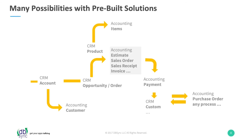One of the cooler things we've done at DBSync is build out templates with common integration scenarios. A very common data flow is managing your pipeline via opportunities and accounts in your CRM — in this case Dynamics. At a certain point, that opportunity is marked closed-won, and you want to generate a corresponding accounting transaction in your accounting system: an estimate, sales order, sales receipt, or invoice. Then your accounting team applies payments in the accounting system, and you might want to send that back to your CRM to keep sales reps up to date on the status of their accounts. DBSync is fully customizable — you can choose what data flows in what direction and at what time, and we can integrate custom entities as well.